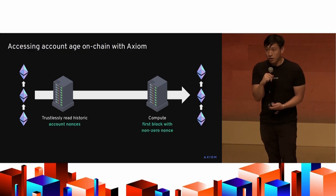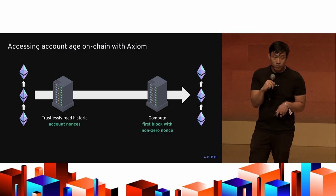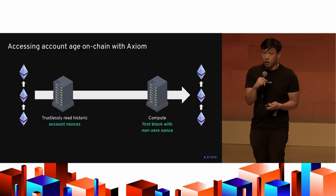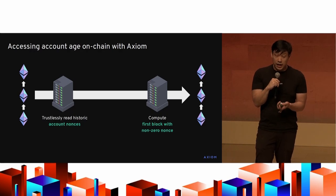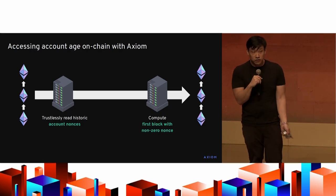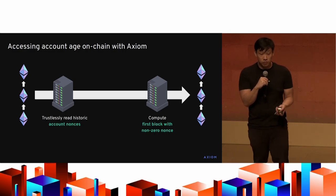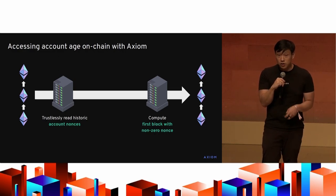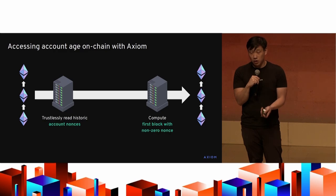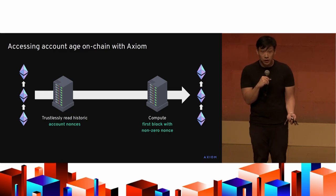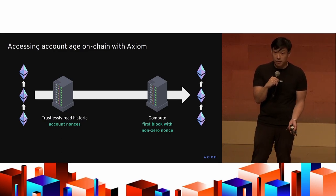Let me walk through some concrete examples. Suppose you want to access a user's account age. You can trustlessly read the historic nonce of their account at two different blocks, then compute the first block that has a non-zero nonce and deposit the age of their account on-chain. We have this running live in a demo on our website today.